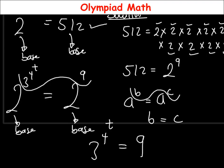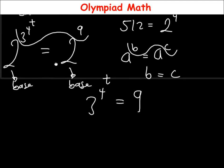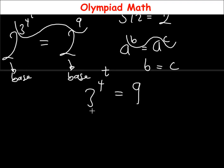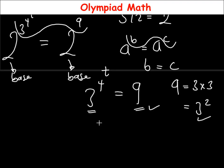Now to solve for t: looking at the left side we have base 3, and on the right we have 9. Since 9 is a perfect square — 9 = 3 × 3 = 3² — we replace 9 with 3². So we have 3 raised to power 4 raised to power t, equal to 3 raised to power 2.